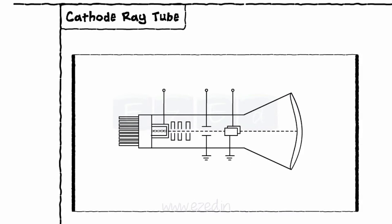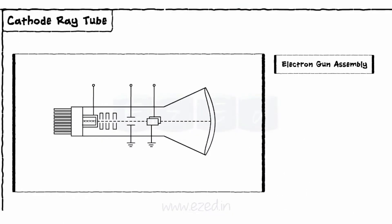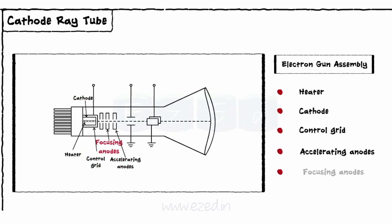The first section is an electron gun assembly. The waveform that we see on the screen is nothing but a ray of electrons generated by the electron gun assembly. Electron gun assembly consists of a heater, cathode, control grid, accelerating and focusing anodes.